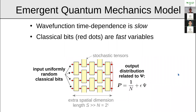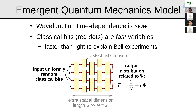A stochastic matrix satisfies the constraint that columns are probability distributions — all elements between 0 and 1, and for any fixed column j, summing over all rows i gives one. So if you input two bits you get a probability distribution over output bits. We also want the wave function's time dependence to be a very slow variable, with the classical bits being the fast variables — a separation of time scales. This helps address Bell experiments, which require some degree of freedom moving faster than light.